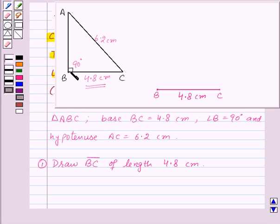Now angle B is equal to 90 degrees. So at point B, let us draw an angle XBC equal to 90 degrees. So here angle XBC is equal to 90 degrees. And thus the second step of construction is at point B, draw angle XBC equal to 90 degrees.